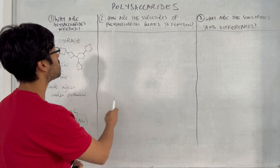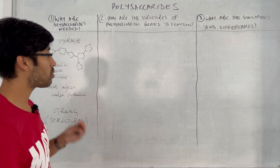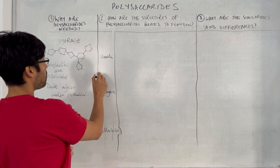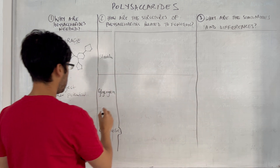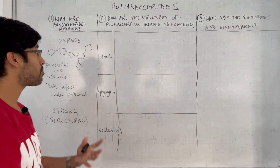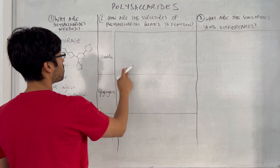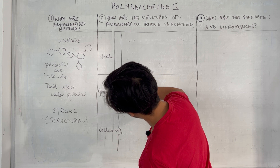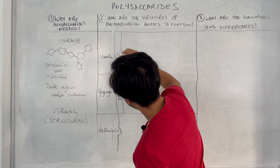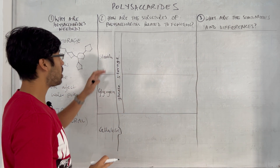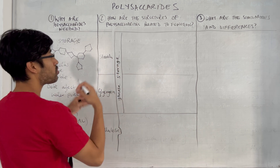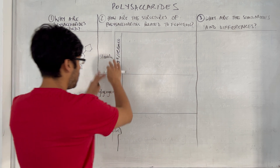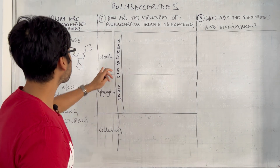Our second question: how are the structures of polysaccharides related to their functions? Let's go function first, because once we know the function the structure makes sense. Starch and glycogen have a shared function: glucose storage and release. The release part is important because it affects the kind of organisms that can be supported.